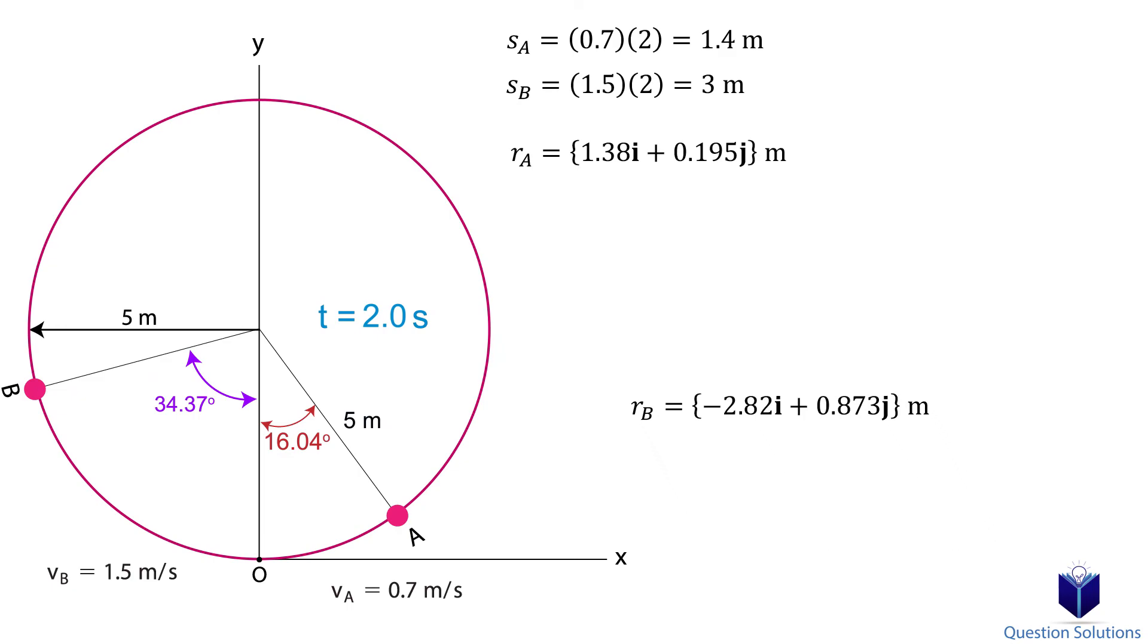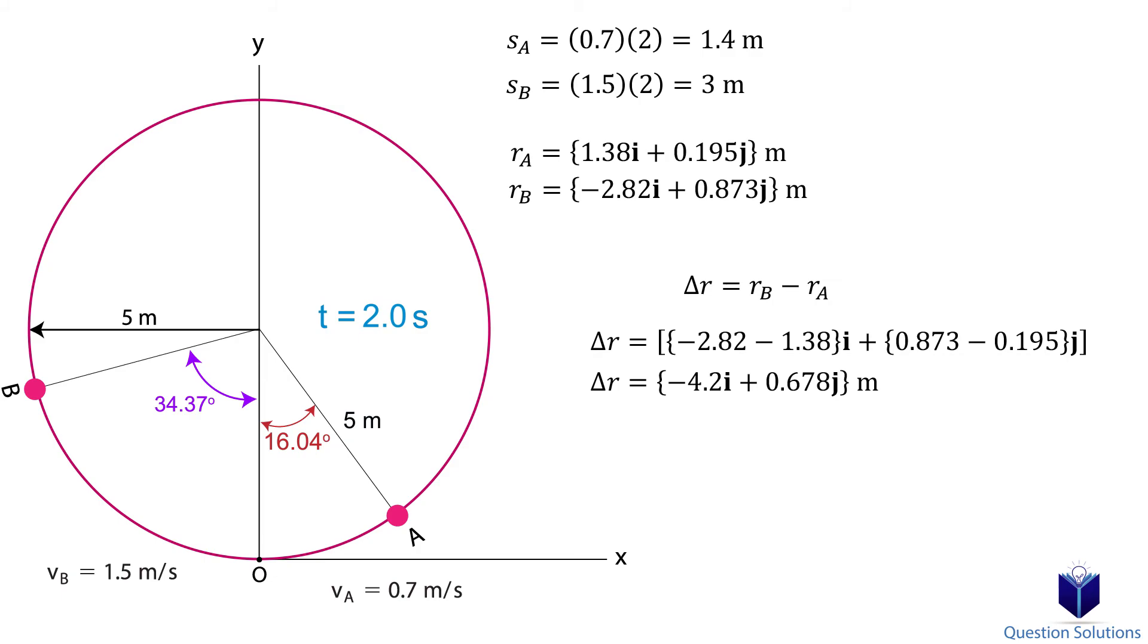The last part of the question asks us to find the shortest distance between the two particles. The shortest distance can be found by subtracting one position vector from the other. This gives us another position vector, but since we need the distance, we need to find the magnitude of this vector. Solving gives us the shortest distance between the two particles.